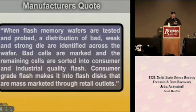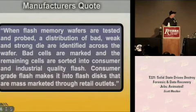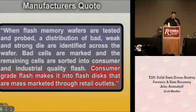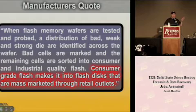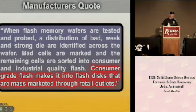I found this interesting — a manufacturer's quote I got right off their webpage, so you can hunt it down. Physically, when flash memory wafers are tested and probed, the distribution of bad, weak, and strong dies are identified across the wafer. Bad cells are marked and the remaining cells are sorted into consumer and industrial quality flash. Consumer grade flash is what makes it into the mass marketed devices through retail chains. Basically, they're telling you they're selling you crap. They tested all these things, here are the crappy ones — they're going to sell the good ones to Cisco or somebody, and the bad ones to generic retail. That's how you get a $6 memory stick as opposed to a $40 memory stick that might be a better buy.